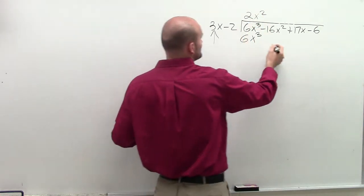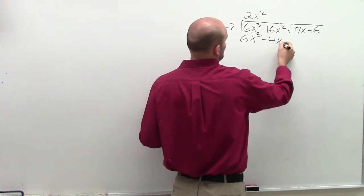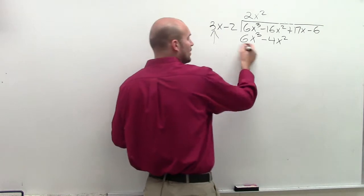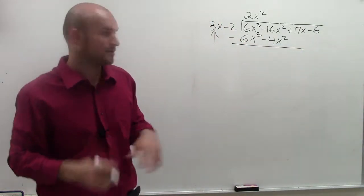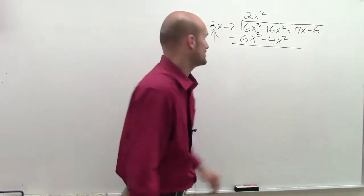And 2x squared times negative 2 is negative 4x squared. Now what we're going to do is subtract the top term from the last term. You could kind of represent zeros there if you want.